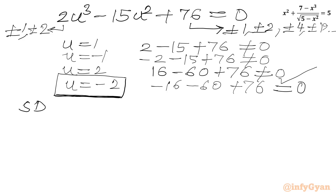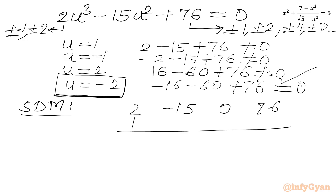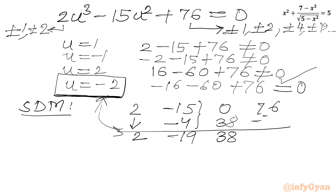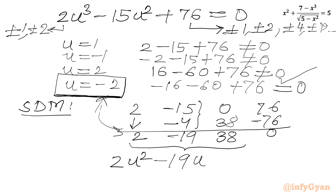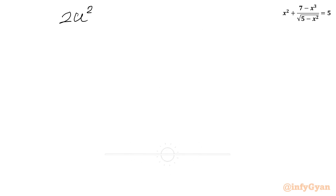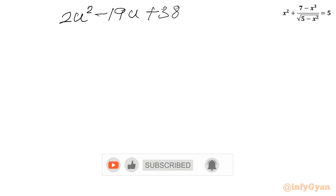Now we can use synthetic division. Writing coefficients of the cubic: 2, −15, 0, 76. With base solution −2: −2 × 2 = −4, sum = −19; −2 × (−19) = 38, sum = 38; −2 × 38 = −76, remainder 0. This gives the quadratic 2u² − 19u + 38 = 0. Using the quadratic formula: u = (19 ± √(361 − 304)) / 4 = (19 ± √57) / 4.